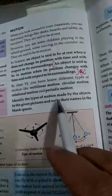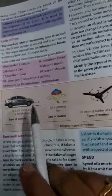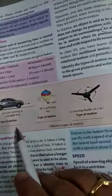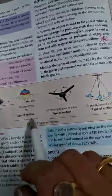Identify the types of motion made by the objects in given pictures and write their names in the blank spaces. Yahan pe motion hai, dekhi hai, yeh car ka motion hai moving in a straight line, this is called rectilinear motion. This type is called circular motion, jo ek jagah pe ghoomta ja raha hai.